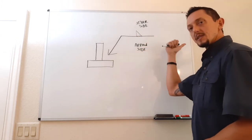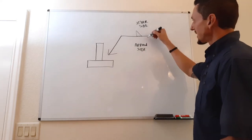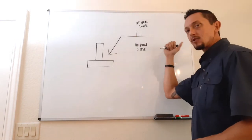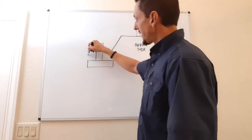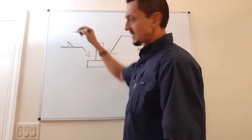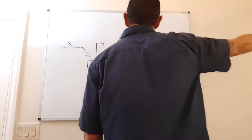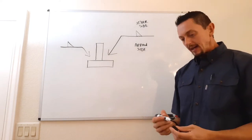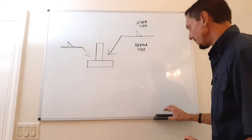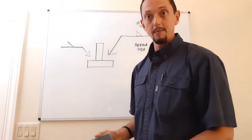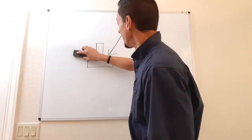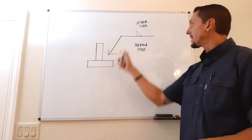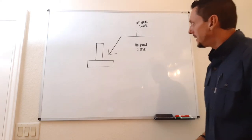A fillet weld symbol will always be oriented flying to the right — to the right off the page. Even if we had multiple weld symbols, they would all face the same direction. The arrow will always fly to your right off the page. That's the correct way to draw a fillet weld symbol.